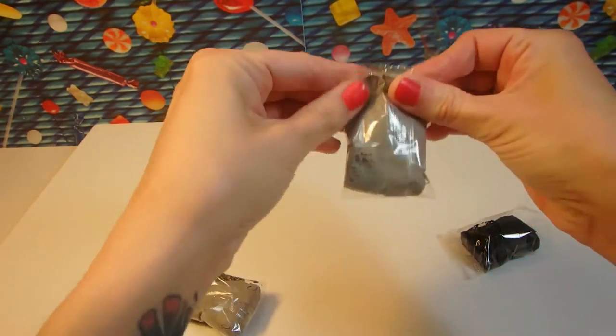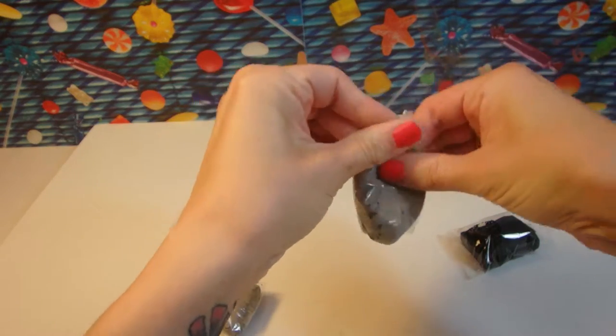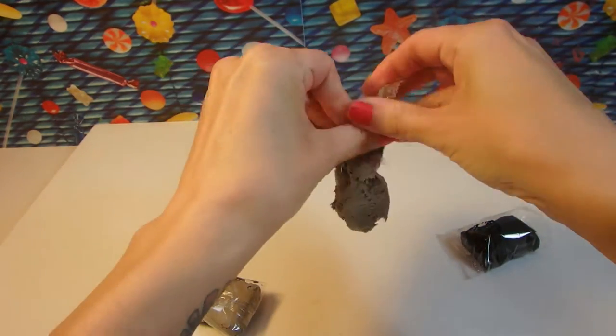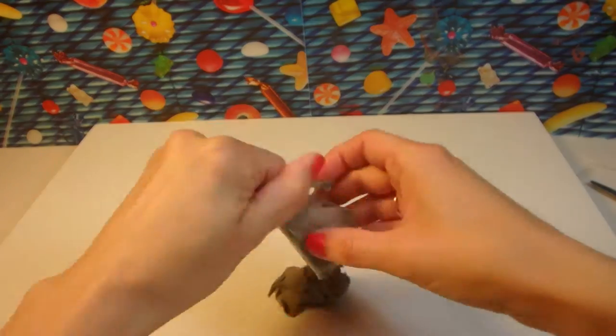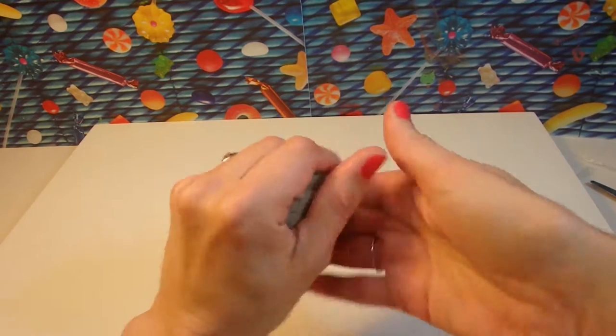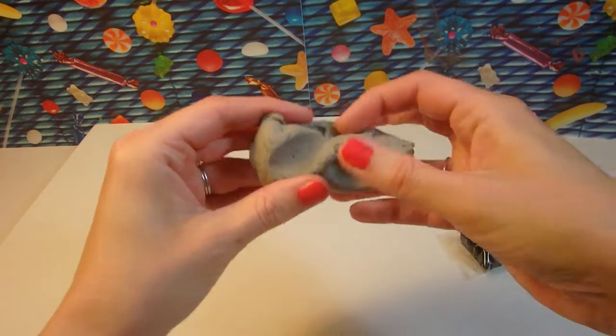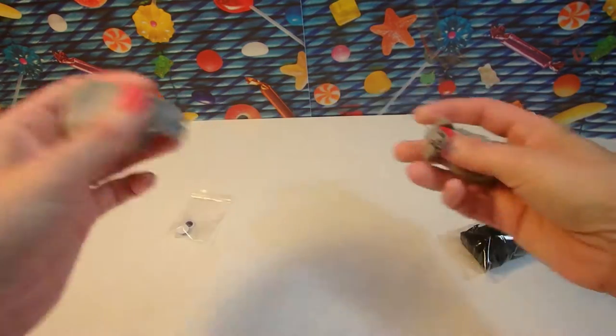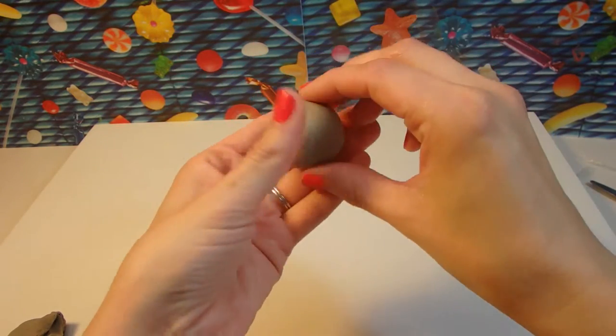Alright, so squeeze out all this squishy grey clay. Okay, so let's start with one big piece of clay for our little raccoon's head. That looks about right.